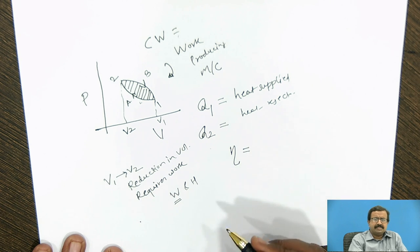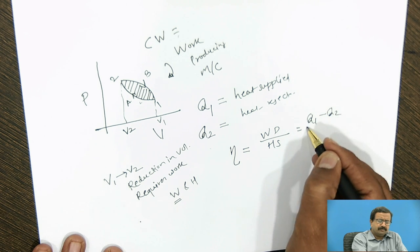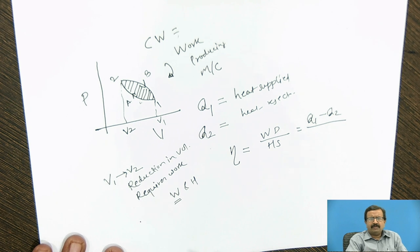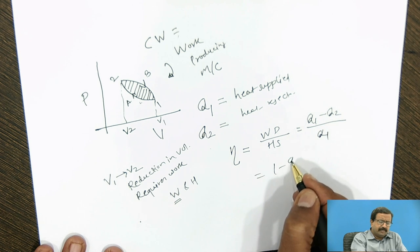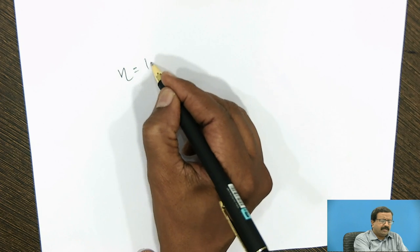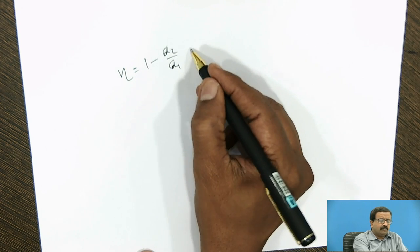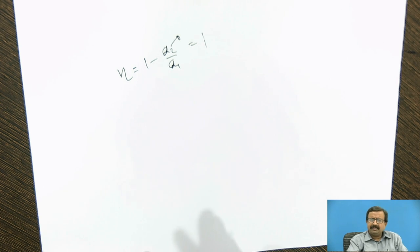The definition of thermal efficiency in general is work done upon heat supplied. What is work done? Q1 minus Q2. Because finally, whatever amount of heat I have supplied and whatever amount of heat I am getting rejected, so Q1 minus Q2 is the work done upon heat supplied is Q1. So, I will get 1 minus Q2 by Q1 as the efficiency. This is very fundamental. When efficiency I write as 1 minus Q2 by Q1, if it is equal to 1, its meaning is Q2 is 0. If I am not rejecting heat, then only I can get the conversion of entire amount of heat supplied into work, which is against the first law of thermodynamics. We cannot have perpetual machine of first kind.